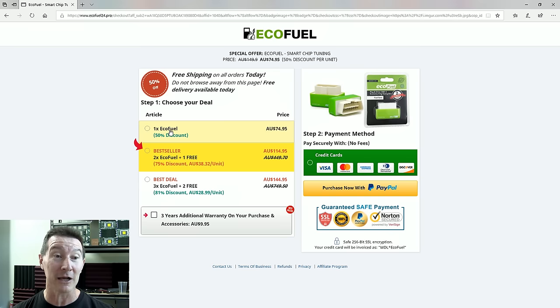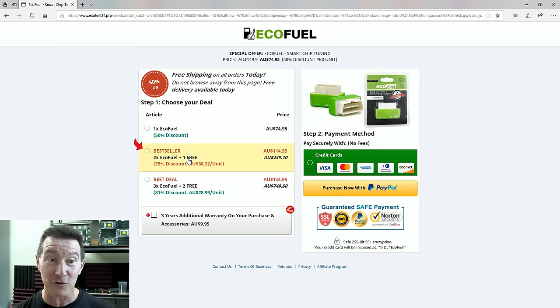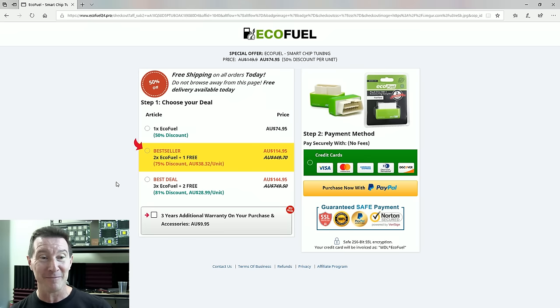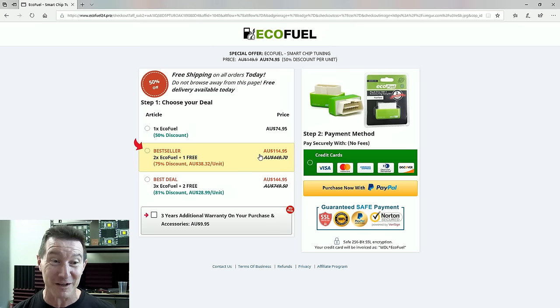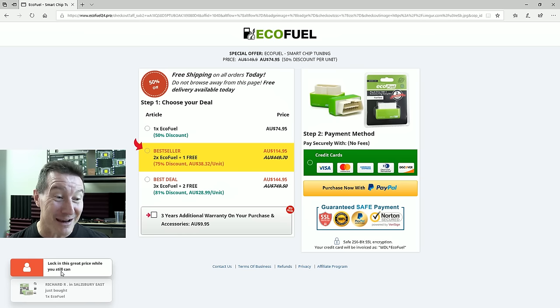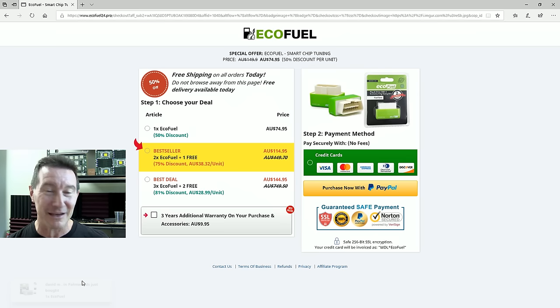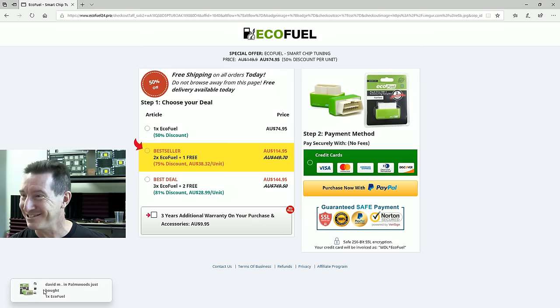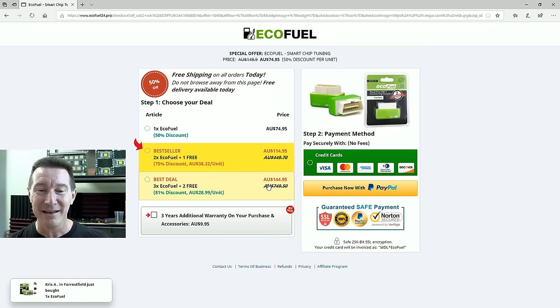One Ecofuel at a 50% discount. 75 bucks. Pay with PayPal. I'm surprised they don't take Bitcoin. Bestseller. Two Ecofuels plus one for free. Wow, you're going to want to pony up the small amount extra for the 115 smackers to get three of them, when you can buy one for 75 bucks. Regularly 450 bucks. Three-year additional warranty. Look at this. Lock in this great price while you still can.